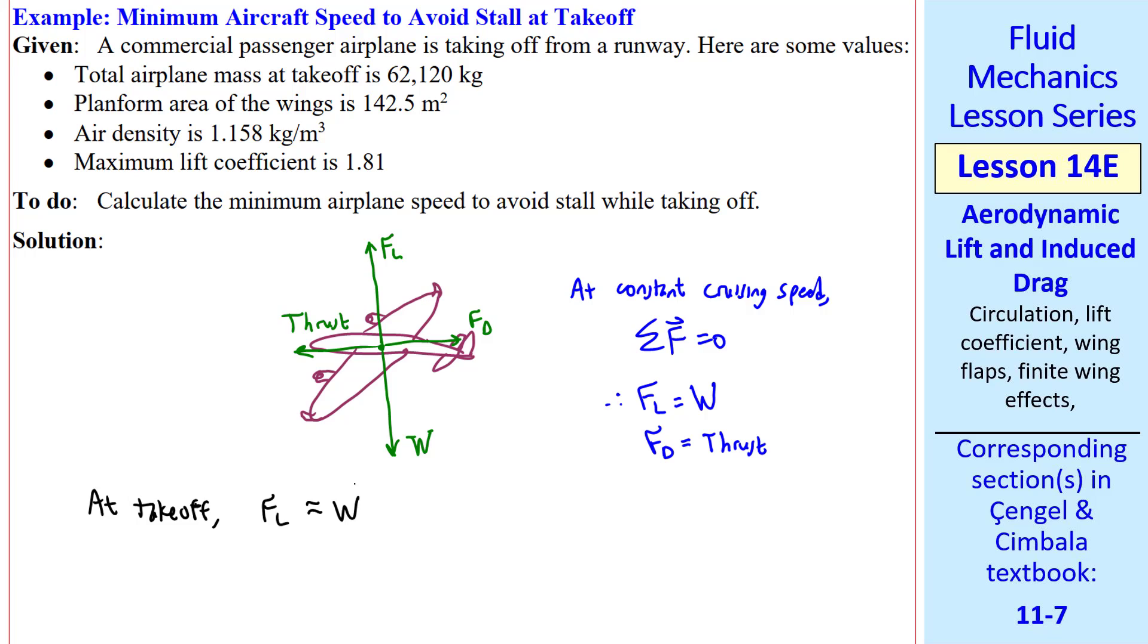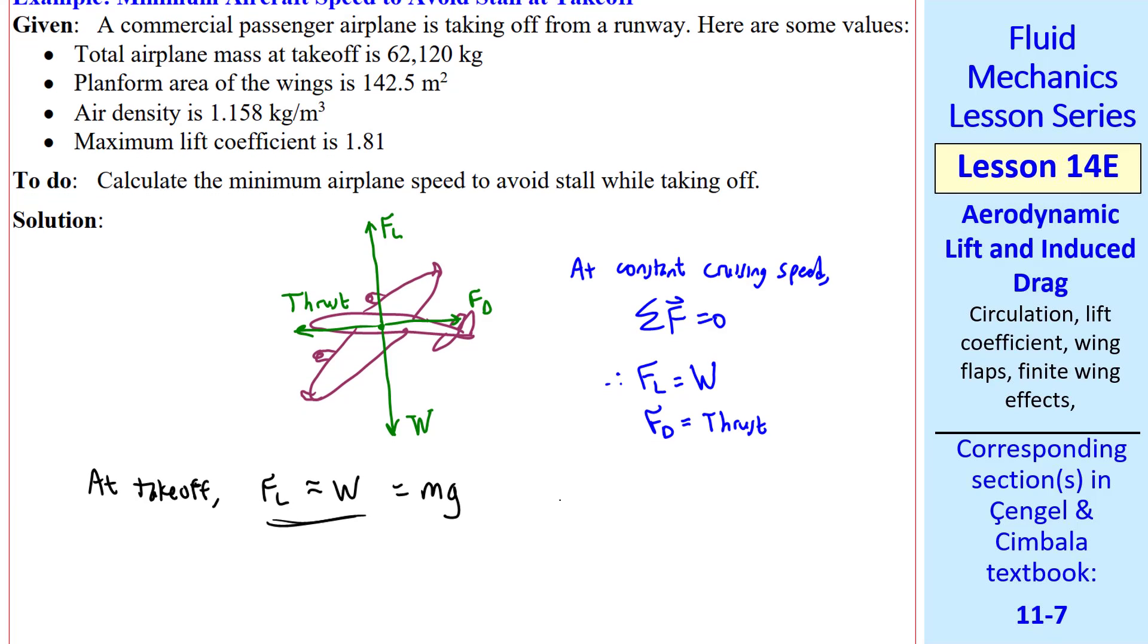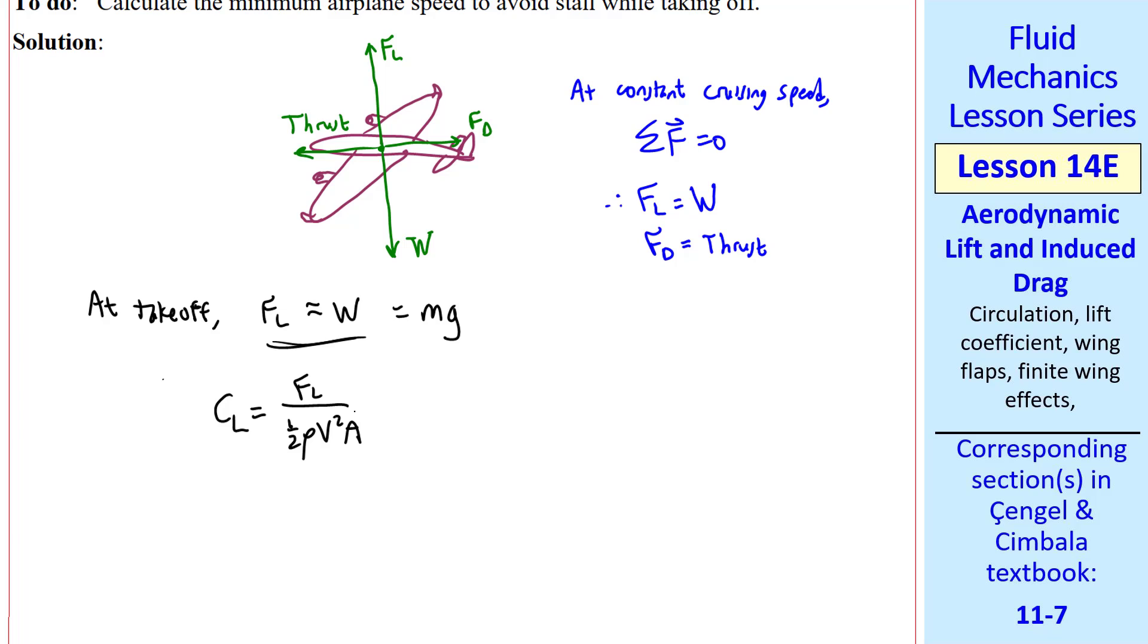At takeoff, FL has to also be approximately W and just a little bit more than that so that the plane can accelerate upward. But we'll just approximate FL equal W in this problem where W is mg. As we mentioned previously, from the definition of CL, FL is one-half rho v squared CL A. So there are two ways to get the required lift. Either you fly at high speed or you have a high CL at low speed.